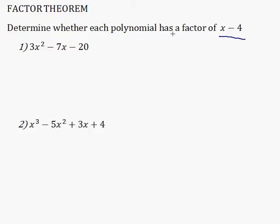The factor theorem says that in this case, if f(4) is equal to zero, that would mean that this polynomial has a factor of x minus 4. So let's give it a try.